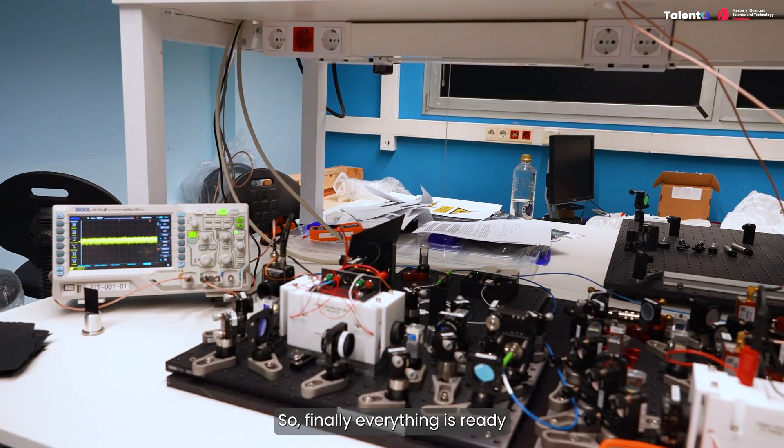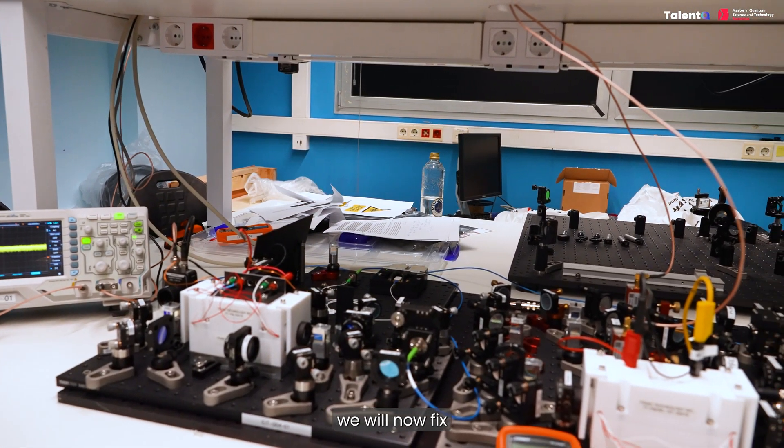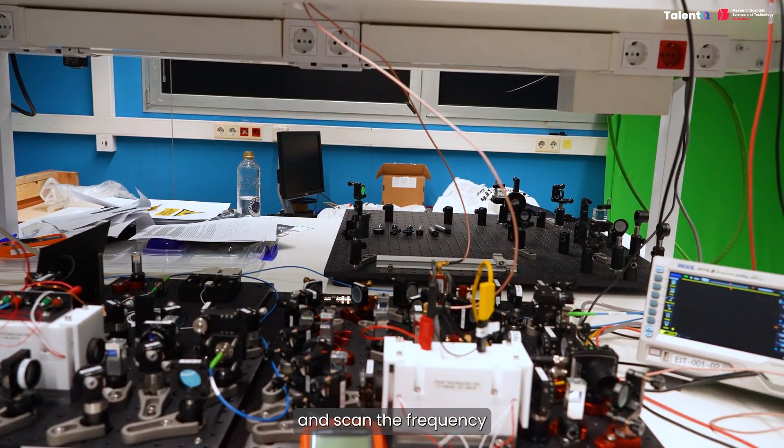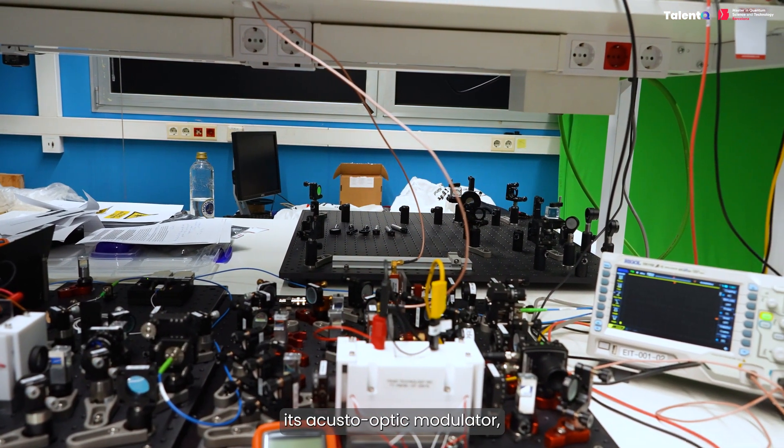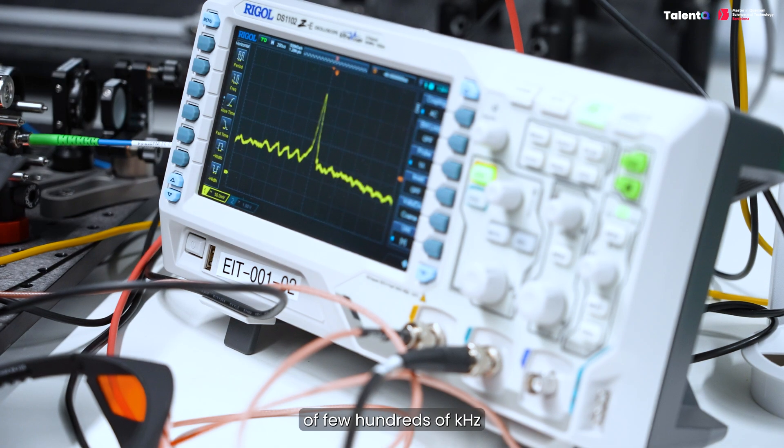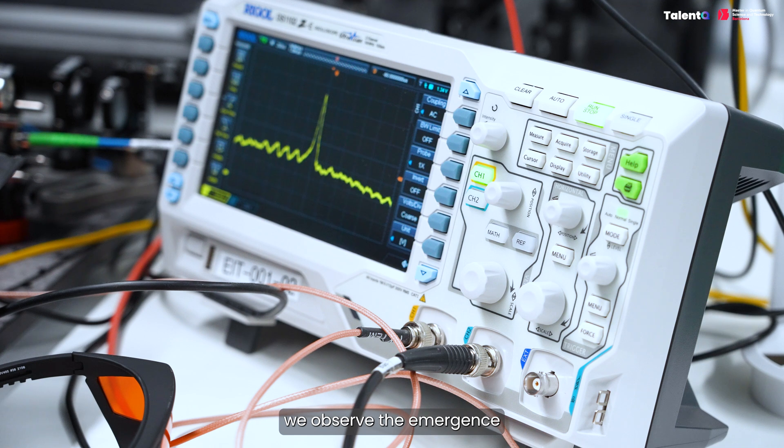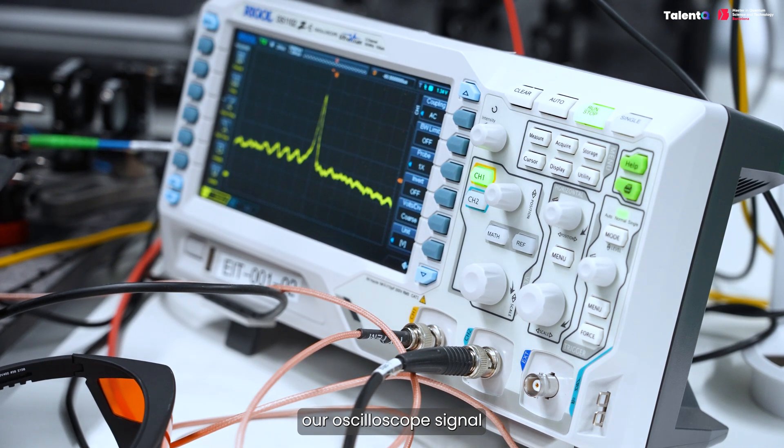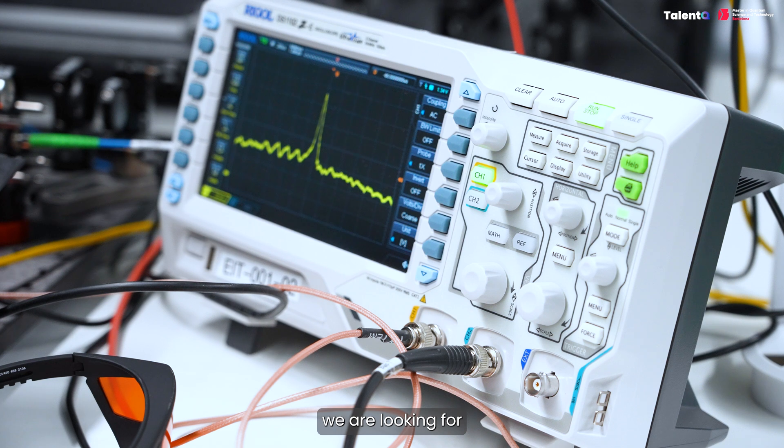So, finally, everything is ready. We will now fix the frequency of the control laser to a fixed value and scan the frequency of the probe beam, using its acoustic optic modulator, over a window of few hundreds of kilohertz. Upon turning on the control field, we observe the emergence of a narrow peak in the middle of our oscilloscope signal. That is the transparency window we are looking for.